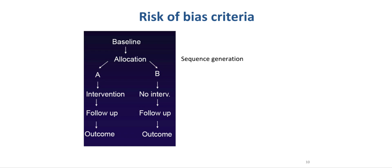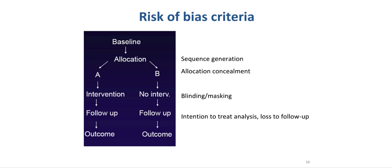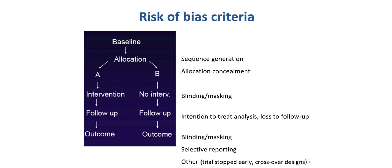In principle, they have to do with basic study design criteria. In randomized controlled trials, they can relate to sequence generation, the allocation of concealment, blinding and masking, whether the intention-to-treat analysis has been applied appropriately, whether there is loss to follow-up, and whether there is blinding and masking of those assessing the outcome and those who perform the analysis and write an article. Related to the end of study is also selective reporting. Furthermore, there are other quality criteria, such as when trials are stopped early for benefit and when there are crossover designs that require special attention.